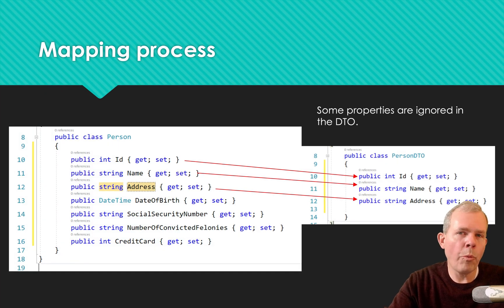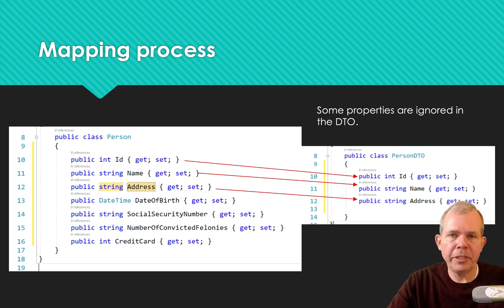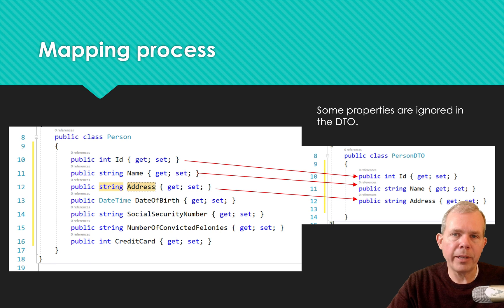There has to be some kind of a function that takes one class and maps the data to another class. It's really just an in-and-out function where it accepts one type of object and returns another type, mapping the two together. A lot of frameworks have this done automatically through automappers. What we're going to do in a project soon to follow is make a manual map so you can understand how the process works. Automapping is very common in frameworks such as ASP.NET.